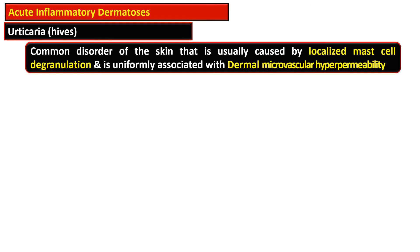The first entity in acute inflammatory dermatosis is urticaria, also termed as hives. It is a common disorder of the skin caused by localized mast cell degranulation and uniformly associated with dermal microvascular hyperpermeability. Two key characteristics are mast cell degranulation and localized dermal microvascular hyperpermeability. It is a hypersensitivity reaction.